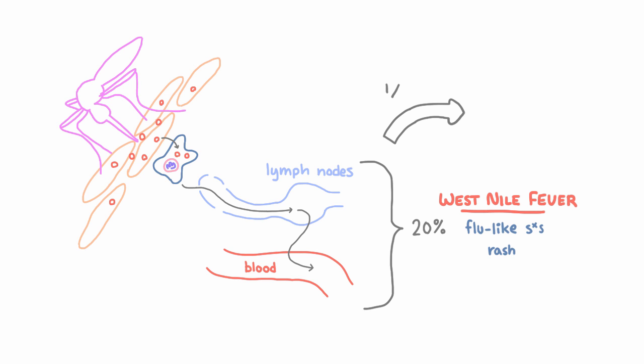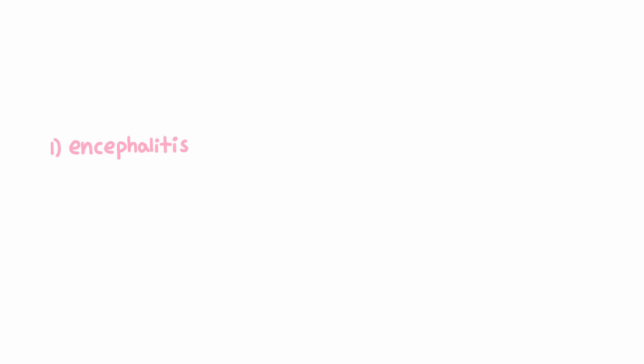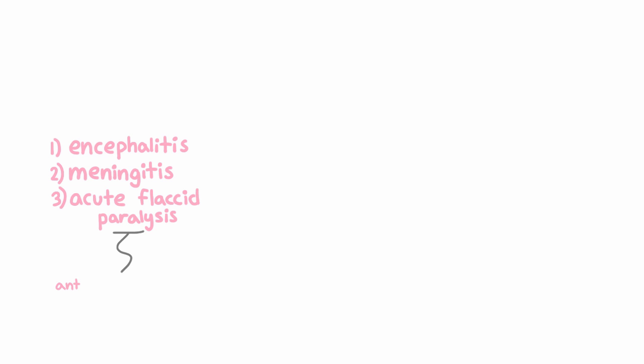But in only 1 out of 200 cases, the virus gets to the central nervous system, and we don't know exactly how. It typically presents with any combination of three clinical syndromes: encephalitis and meningitis, as well as acute flaccid paralysis, which happens when motor neurons in the anterior horn of the spinal cord get infected. It can cause all three of these, and that's why we say West Nile virus causes neuroinvasive disease, instead of just saying it causes encephalitis.